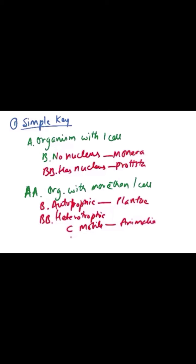If the organism has more than one cell, it can come under two kingdoms — Plantae or Animalia. If it is autotrophic — meaning it can make its own food — place it in Plantae. If it is heterotrophic, place it in Animalia. So the simple key I made: organism with one cell → no nucleus = Monera, has nucleus = Protista; more than one cell → autotrophic = Plantae, heterotrophic = Animalia.